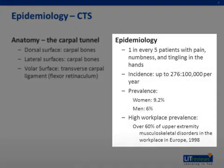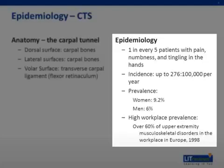With more and more patients and clinicians becoming aware of the signs and symptoms of carpal tunnel syndrome, both the incidence and prevalence of CTS has increased in recent decades. Nearly one in five patients who presents with this constellation of hand pain, numbness, and tingling is expected to have CTS based on clinical exam and electrodiagnostic testing. Currently, the incidence is up to 276 cases per 100,000 patients annually, with a prevalence of 9.2% in women and 6% in men. A review of the musculoskeletal disorders reported from European workplaces in 1998 revealed that over 60% of upper extremity complaints were the result of CTS.